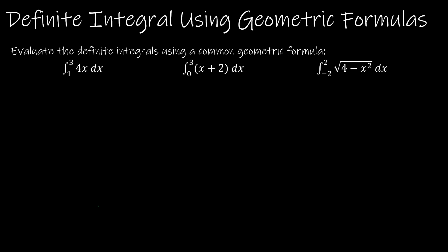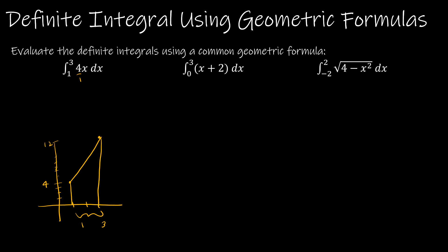Here are three questions for you to try using a geometric formula. I purposely did not graph these ahead of time so that you had to think about what the picture would look like or what shape it would make. For the first one, we're going from 1 to 3 and we're doing 4x. So 4x means I'm going up 4 over 1. At 1, the value of the function would be 4, and at 3, the value would be 12. So my picture is going to look like a shape between 1 and 3 — this is a trapezoid.